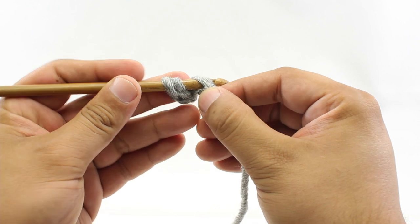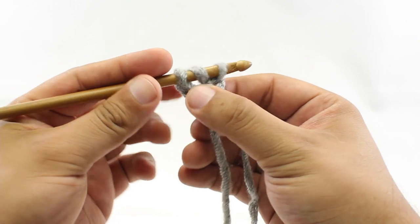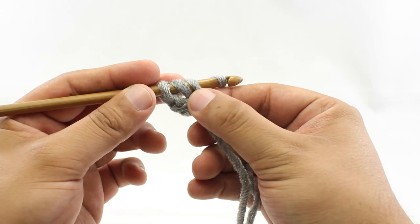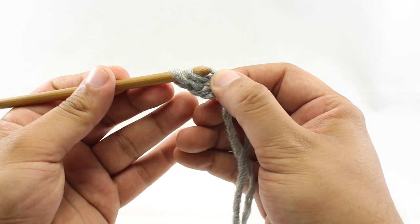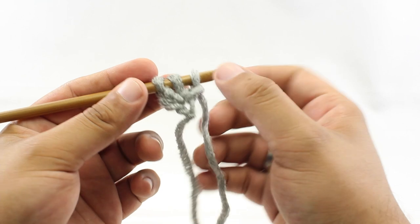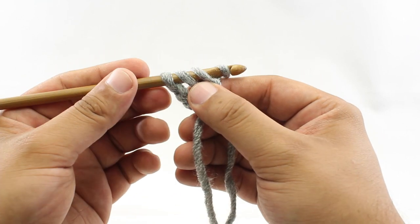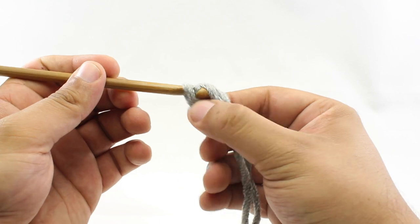For step three, we're going to yarn over and draw through. Then for step four, we're going to yarn over and draw through the first loop on our hook. Now for step five, we'll yarn over again and we're going to draw through all three loops that are on our hook.